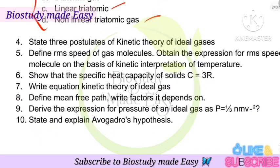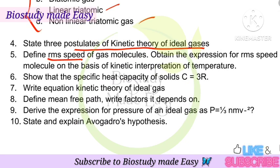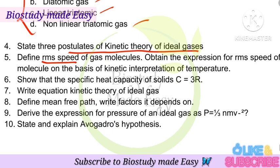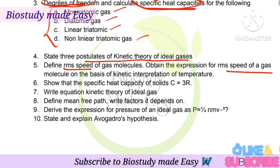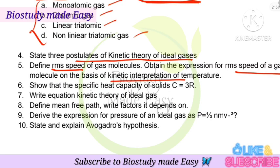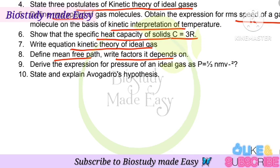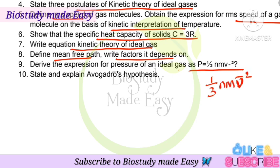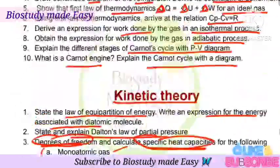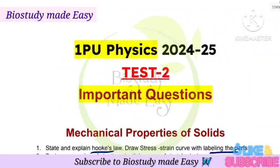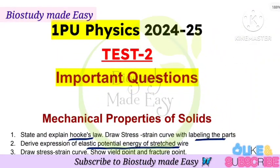Postulates of kinetic theory of ideal gas. Define RMS speed of a gas molecule and obtain the expression for RMS speed. Kinetic interpretation of temperature — show that specific heat capacity of a solid C = 3R. Write the equation of kinetic theory of ideal gas. Define mean free path, write the factors on which it depends, and derive the expression for pressure of an ideal gas: P = (1/3) NM v² (vector form). State and explain Avogadro's hypothesis. These are all the important questions from the Kinetic Theory chapter. Hope it helps, my dear children — happy learning, all the very best!